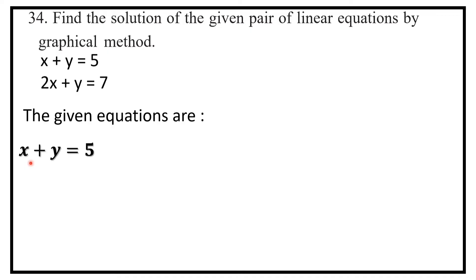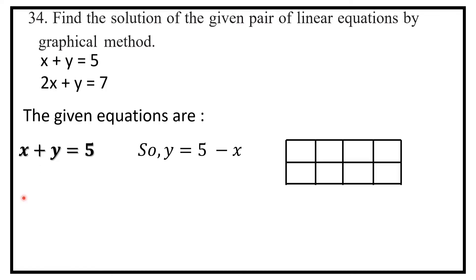The first equation is x plus y is equal to 5. Transposing x to the RHS gives y is equal to 5 minus x. Now let us build a table of values for x and y. When x is 0, y is 5. When x is 1, y is 4. When x is 2, y is 3.